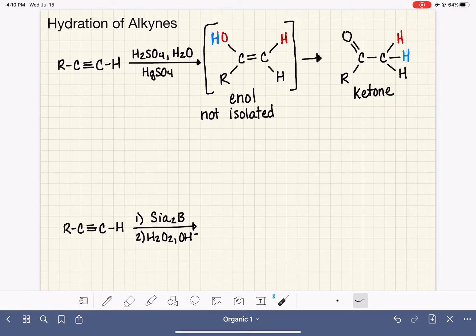So this tautomerization process does look pretty crazy, but it's actually very easy to understand with a mechanism. So let's go ahead and draw the mechanism out. And I'm going to use the same molecule or enol with just the R to represent the R group.